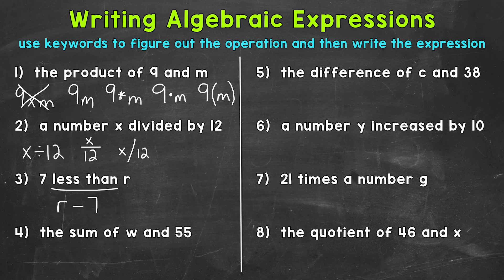Number 4: the sum of W and 55. 'Sum' is our keyword, and that's the answer to an addition problem. So this is going to be addition: W plus 55.